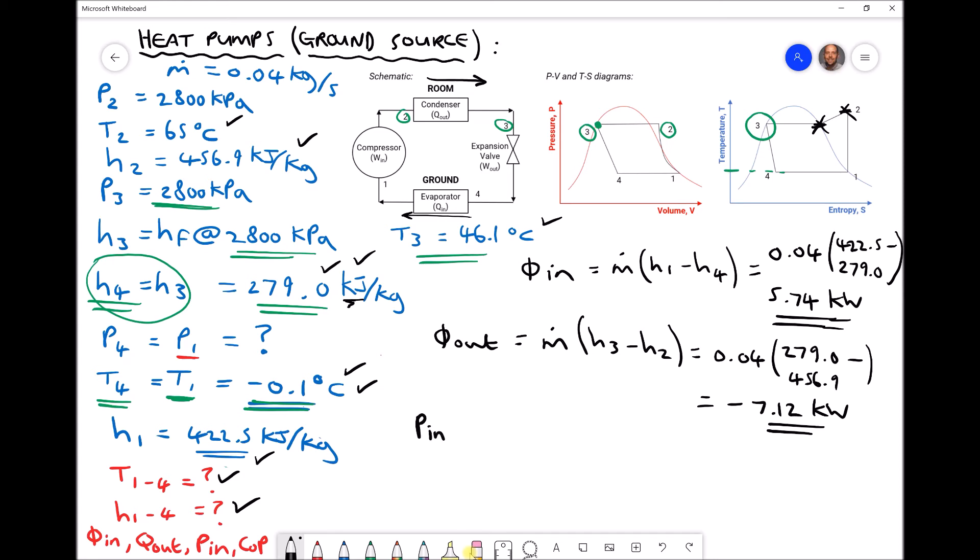P in, then, is the work done by our compressor. Mass flow rate times, referring to our diagram, exiting the compressor we have H2 and entering we have H1. Our mass flow rate remains constant, our H2 value remains constant, 456.9, and our H1 value on the left-hand side is 422.5.